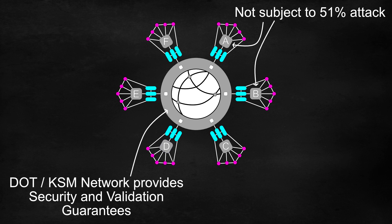parachains are not subject to typical blockchain attack scenarios such as a 51% attack. This is because the DOT or KSM validators, not the collators, will reject invalid blocks.